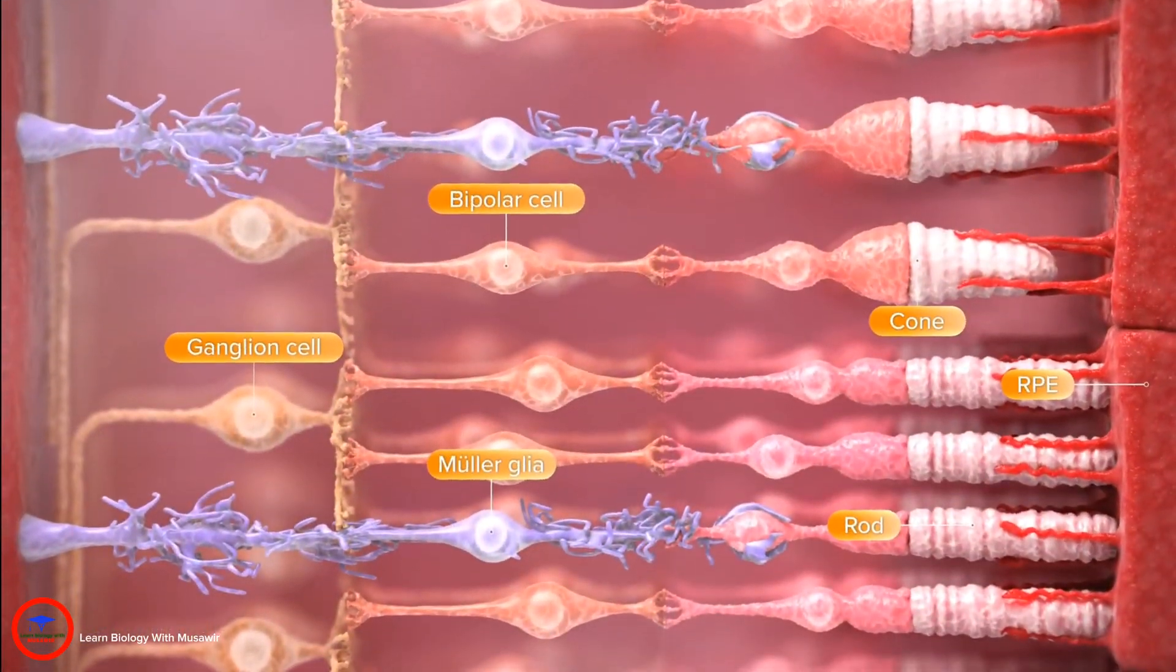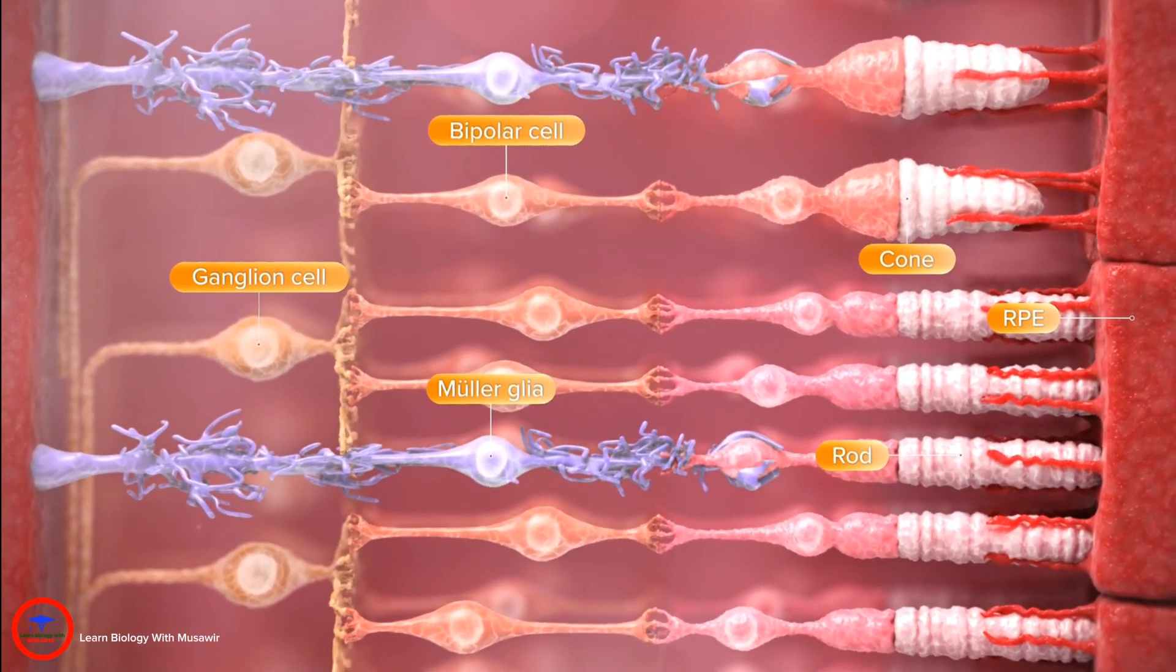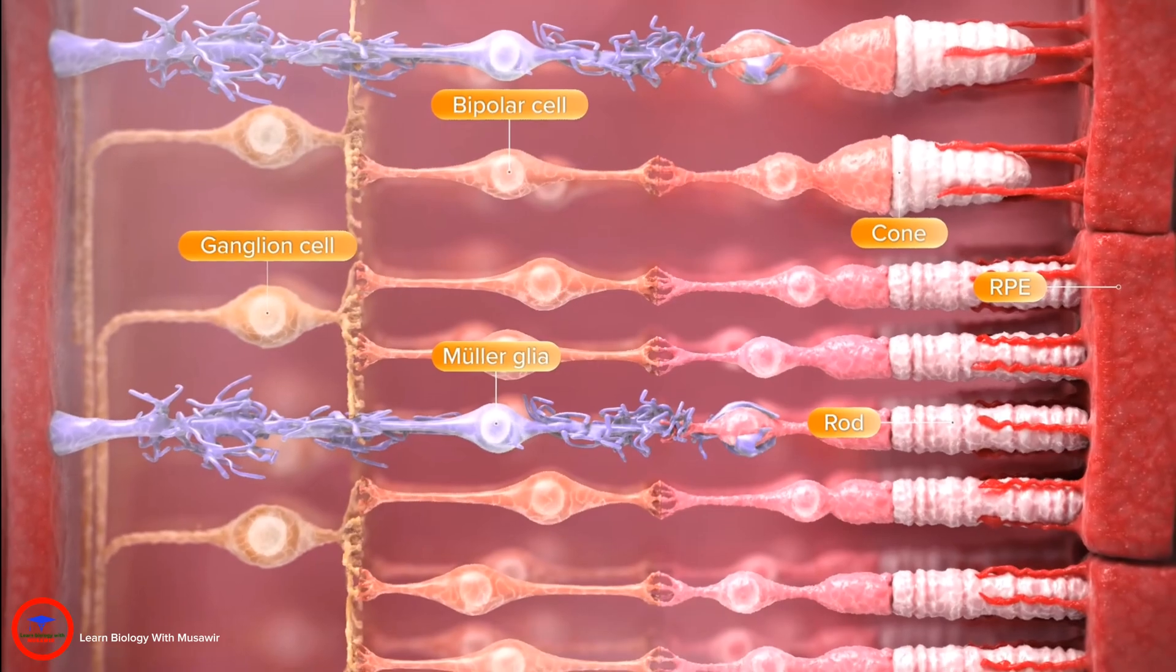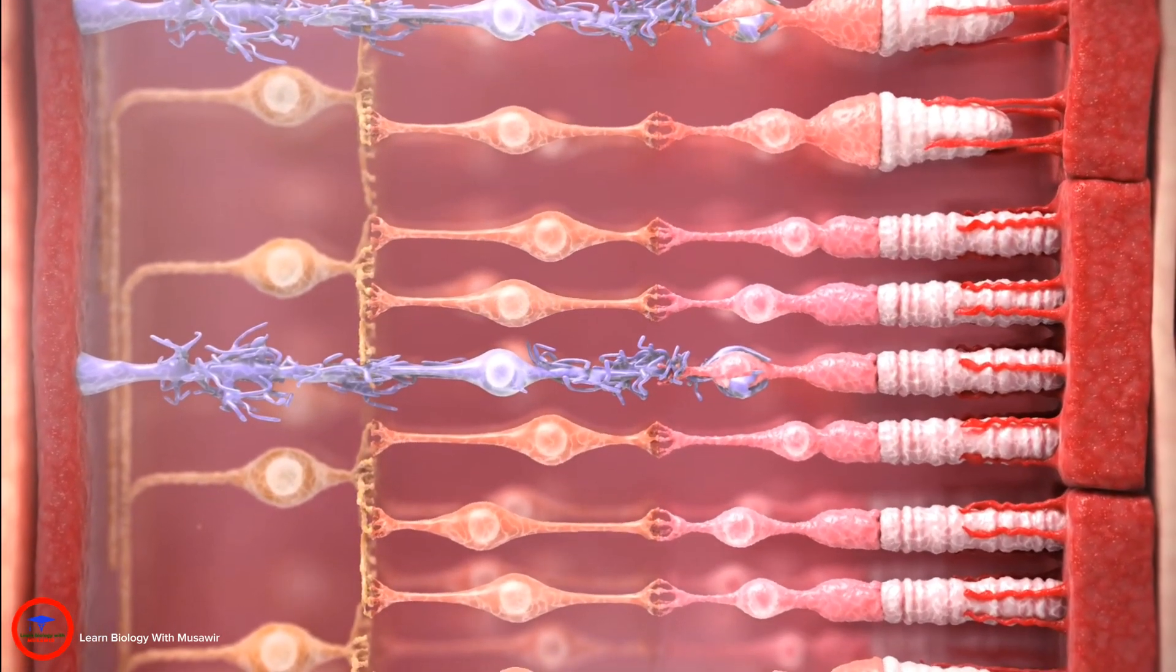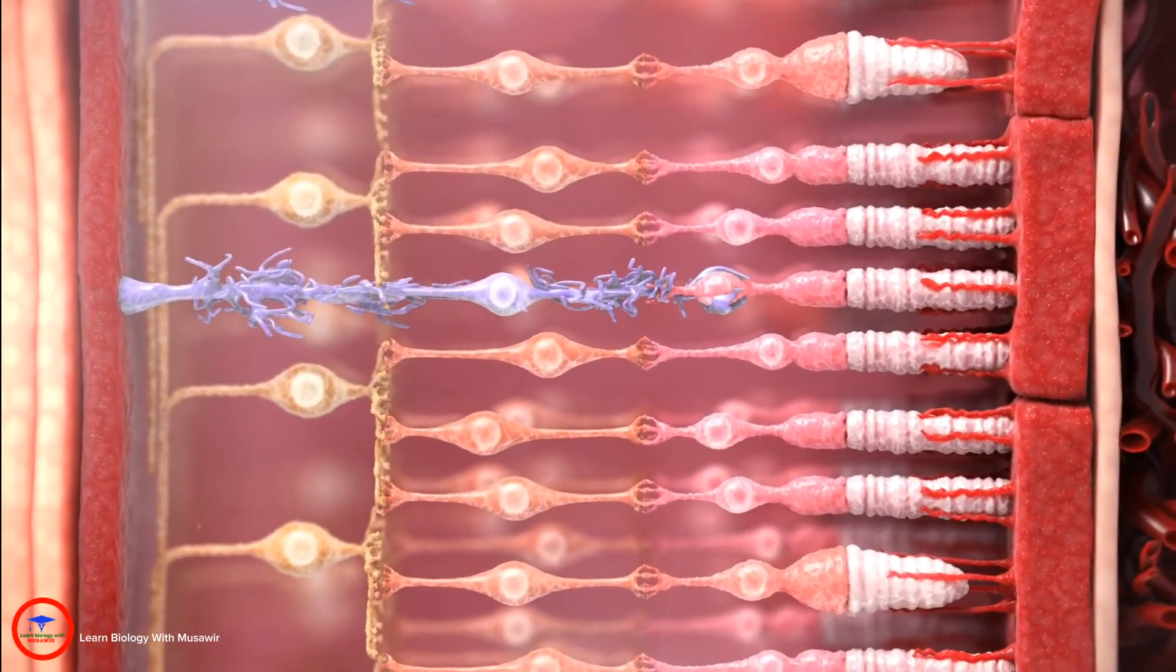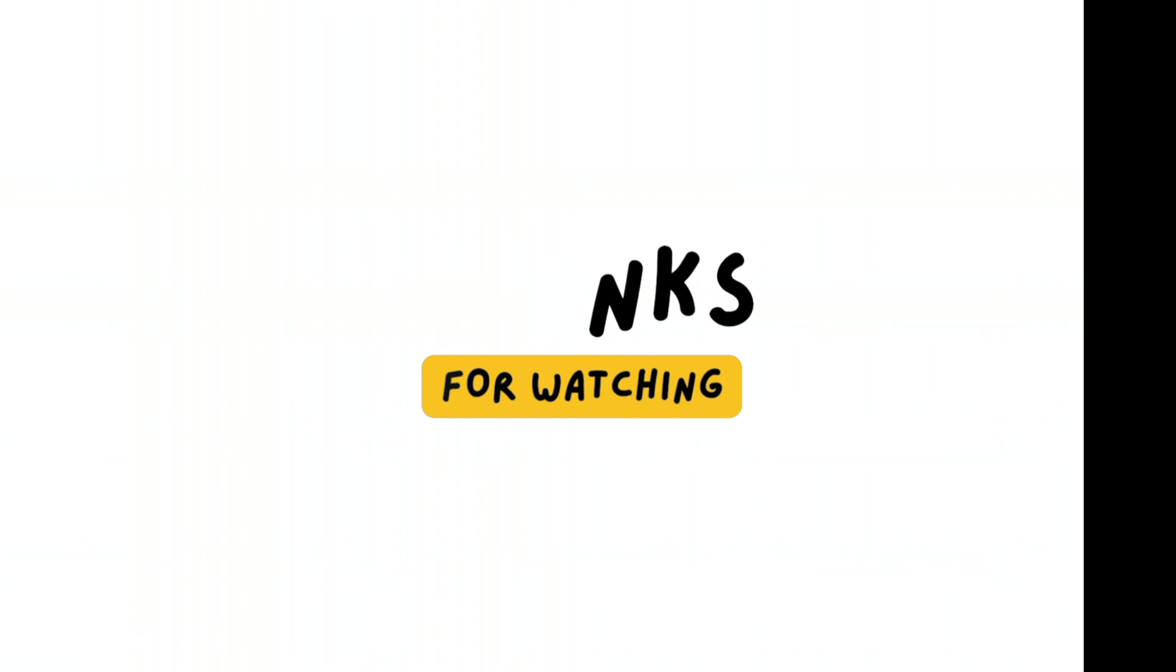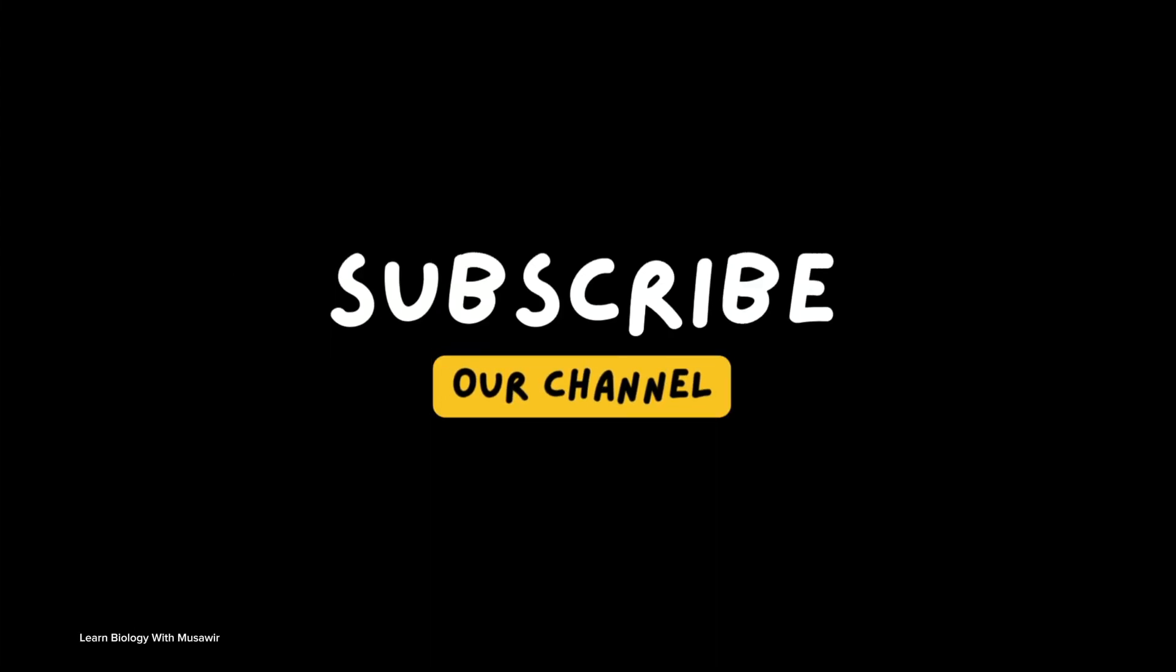The cells of the retina constitute a self-equilibrating biological system. When each element is healthy, homeostasis is maintained. But if any element is unable to perform its role, the entire retina can suffer.